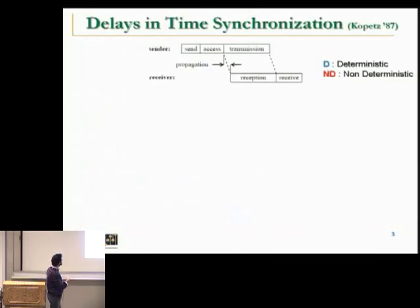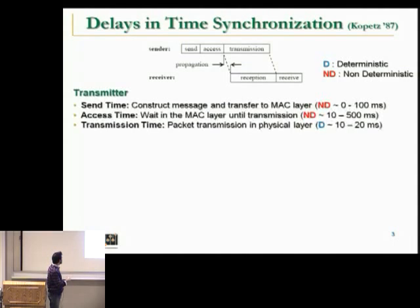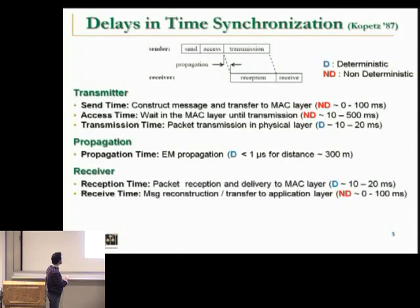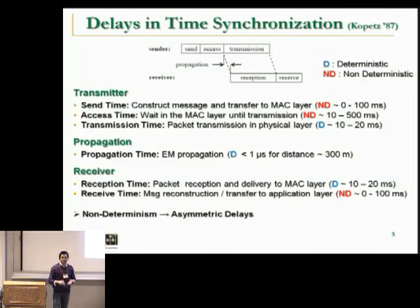It's important to understand that delays in clock synchronization do not refer just to electromagnetic propagation delay, but to total delays incurred at the transmitter site, such as send time, access time, and transmission time of the package, plus electromagnetic propagation, and the symmetric counterpart of the transmitter part: reception time and receive time. The delays are highly non-deterministic.